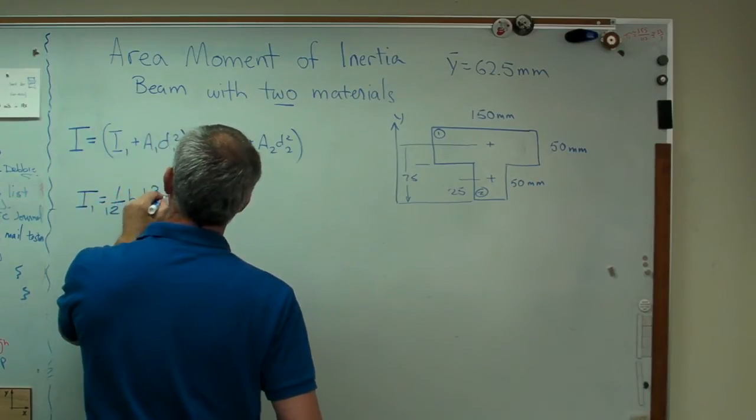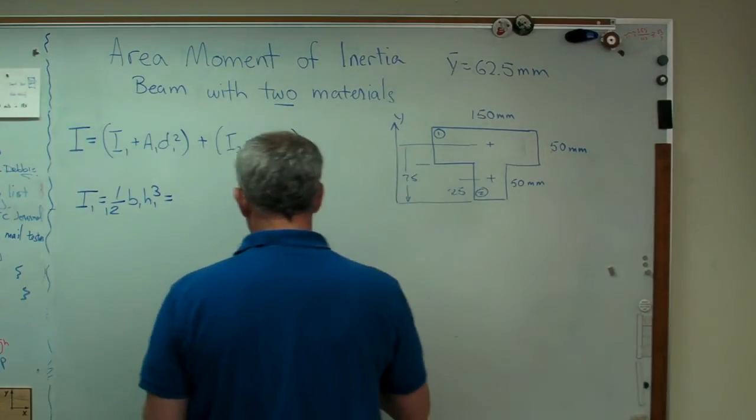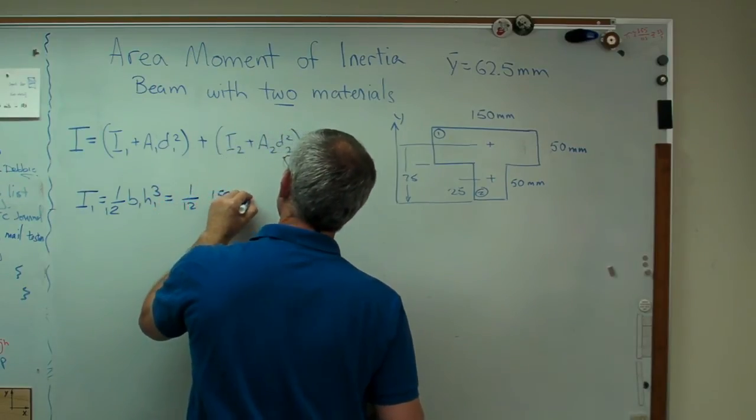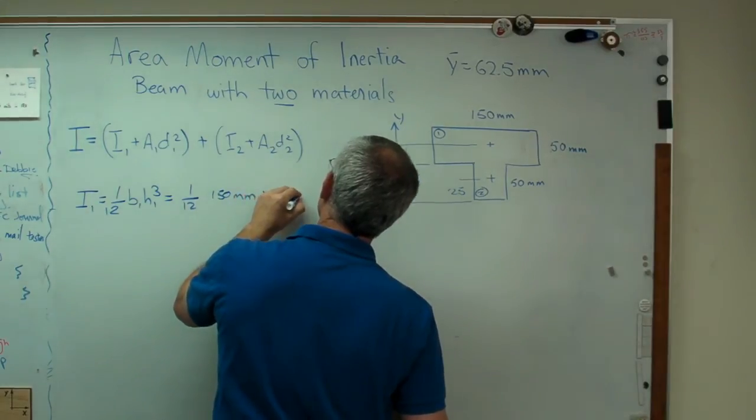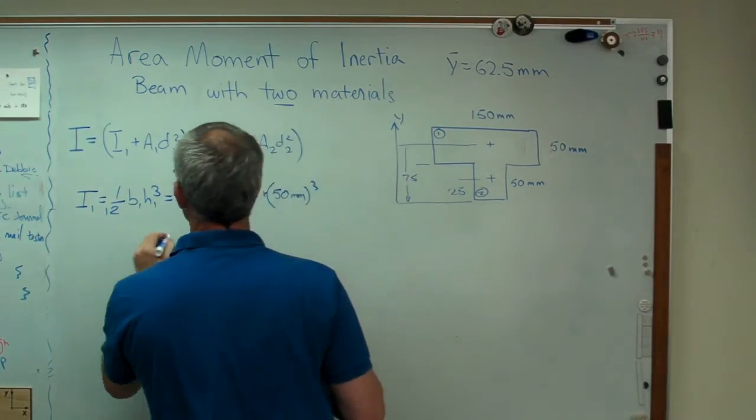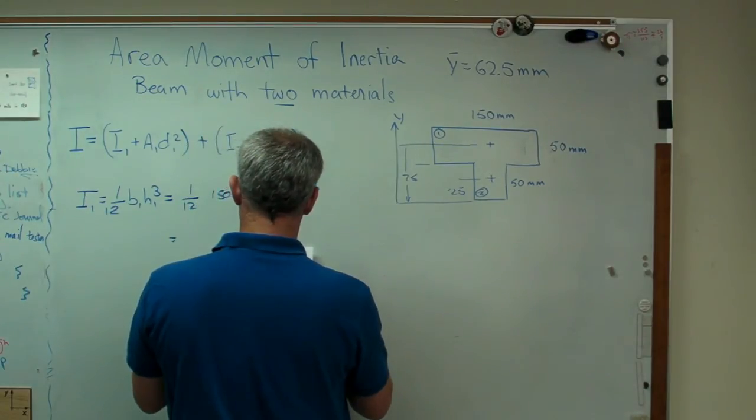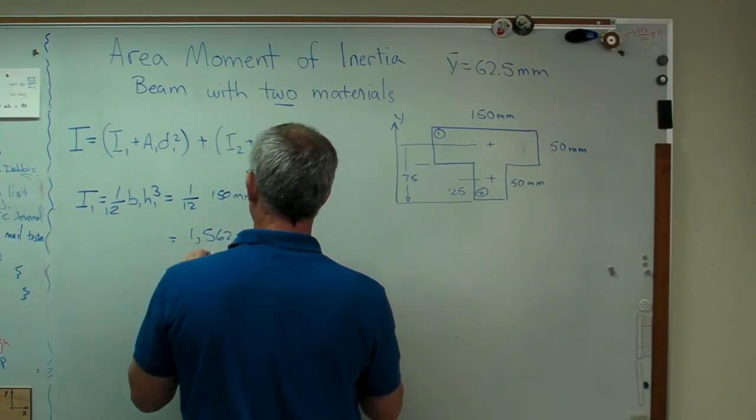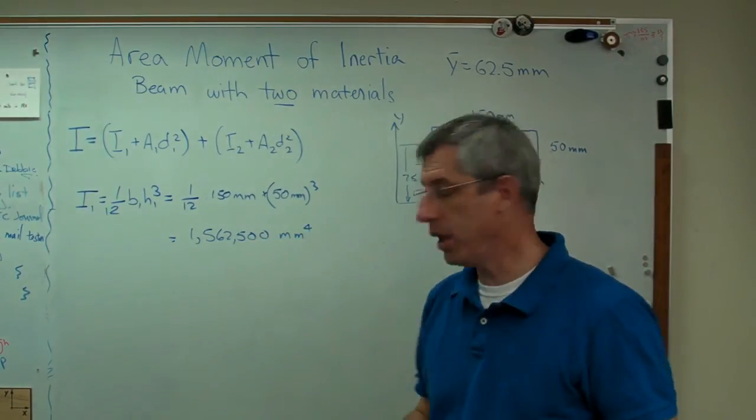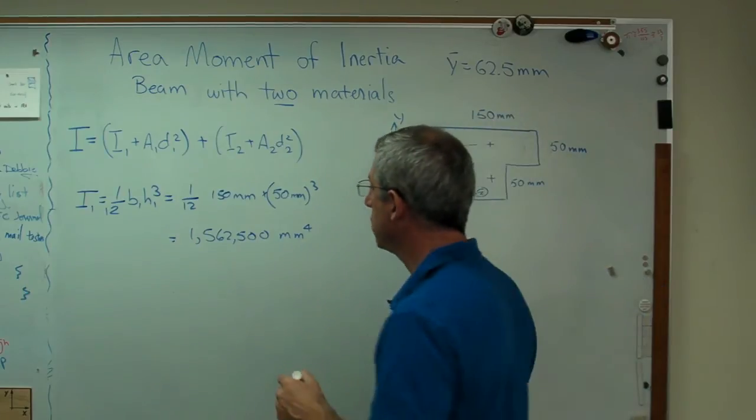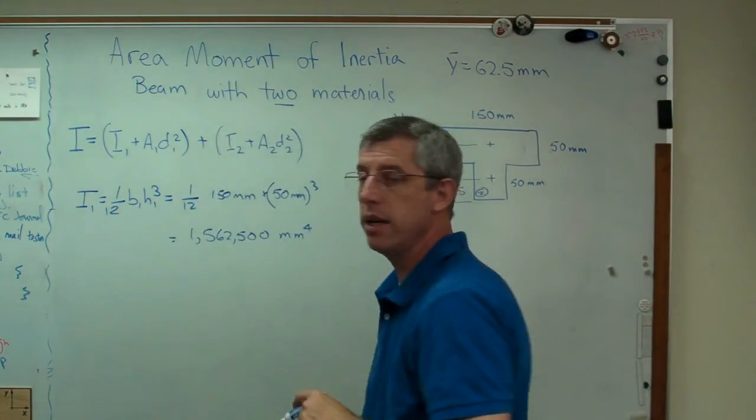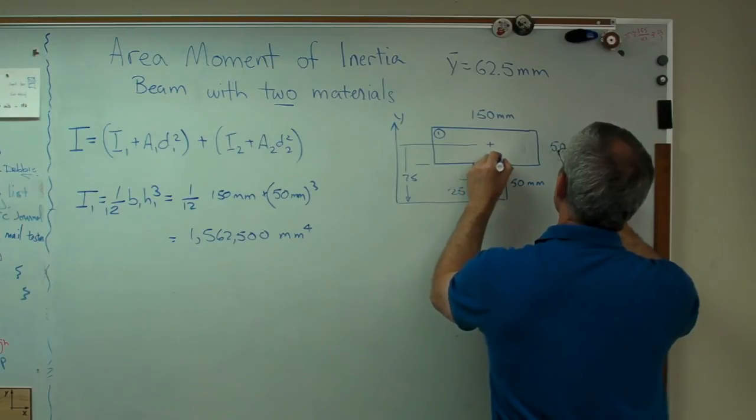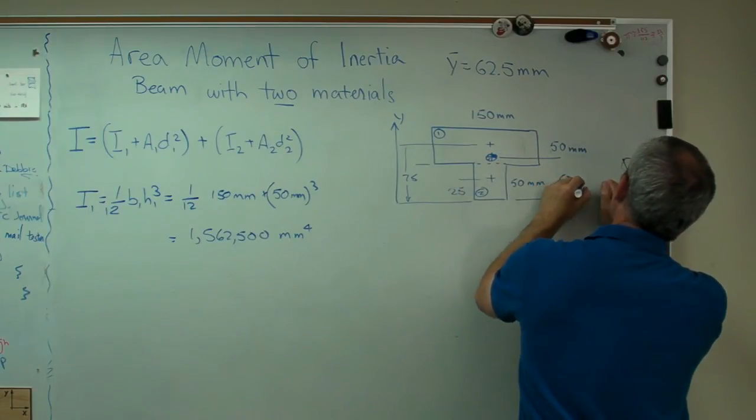1/12 B1 H1 cubed. I've got my cheat sheet here. I'm not going to work all these out by hand. And let's see. B1 is 150 millimeters times 50 millimeters cubed. And that is, let's see if I've got it right here. 1562500 millimeters to the fourth now because I am calculating area moments of inertia.